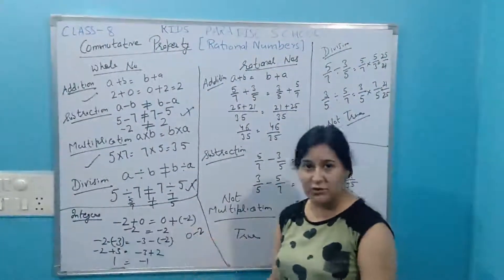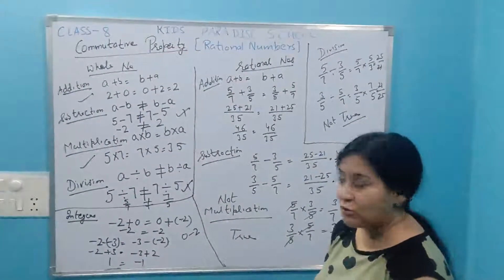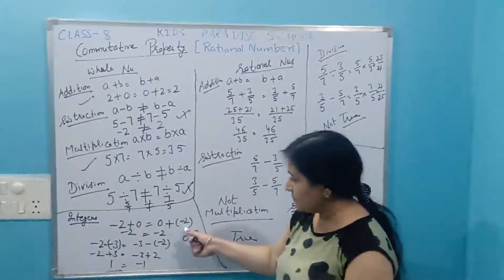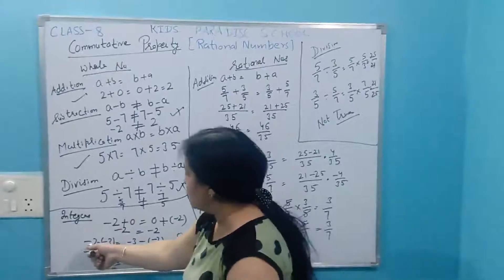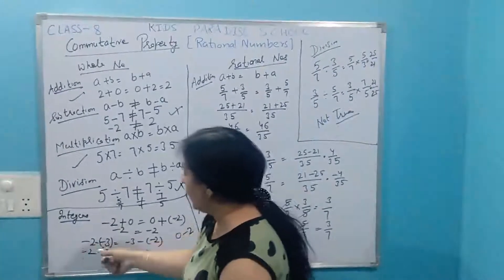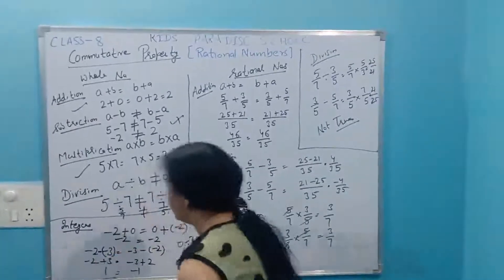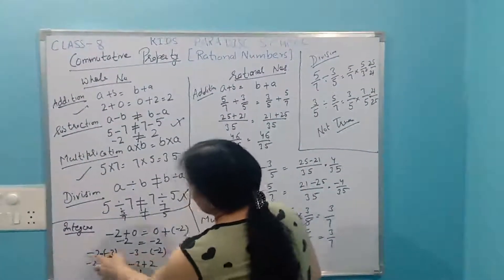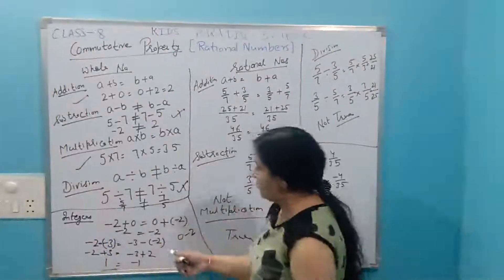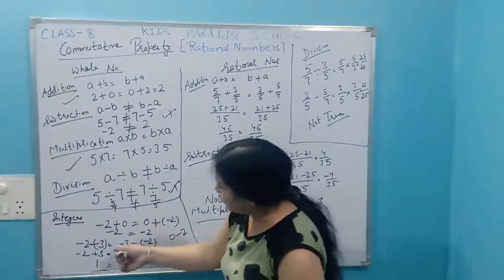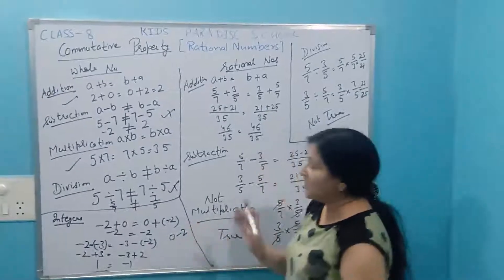Minus two equals minus two. If there are two integers a and b, then a plus b is also equal to b plus a. In the case of subtraction, take two integers: minus two and minus three. We subtract them: a minus b versus b minus a. Minus two minus (minus three) versus minus three minus (minus two).